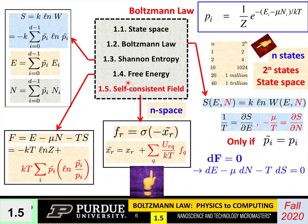Finally, in lecture five, we talked about something rather different — the self-consistent field method, which is widely used in condensed matter physics and device physics. Electrons are interacting particles, and to do it right you need to apply the Boltzmann law to this interacting system. But the Boltzmann law is in this 2 to the n space, which gets to be huge in a hurry. So it's important in practical problems to have a method that can be applied in n space — and that's what we described in the fifth lecture. We'll see much more of this in the coming weeks when we get into neural networks. Thank you.